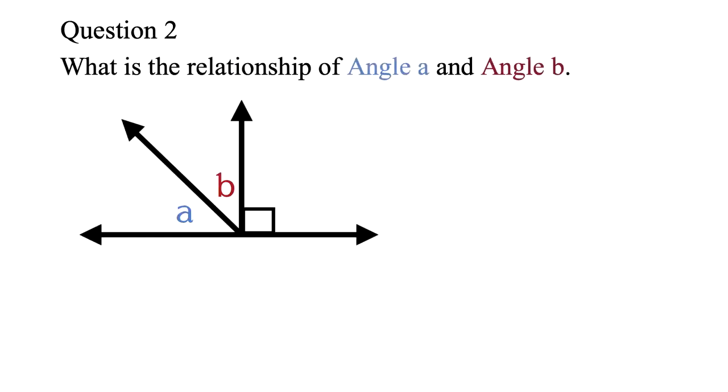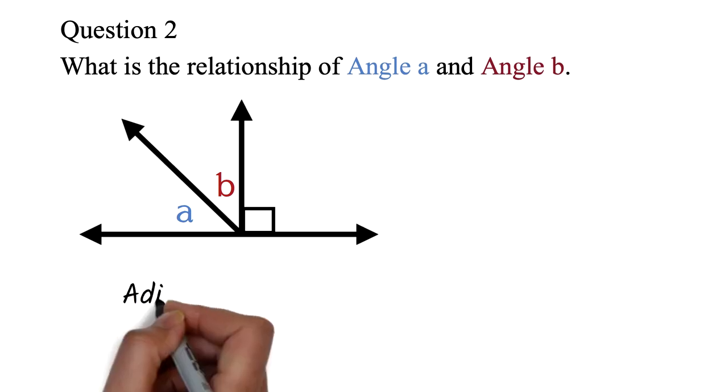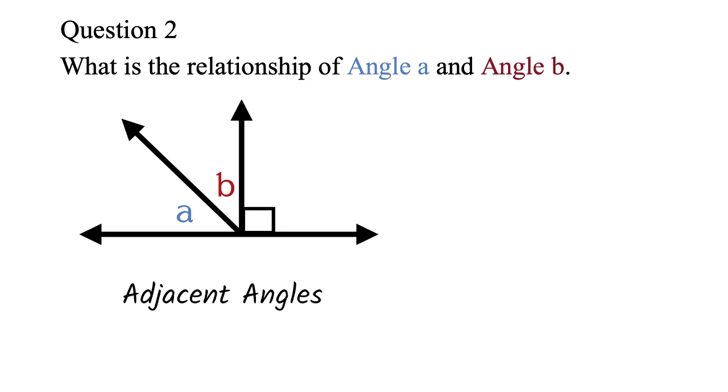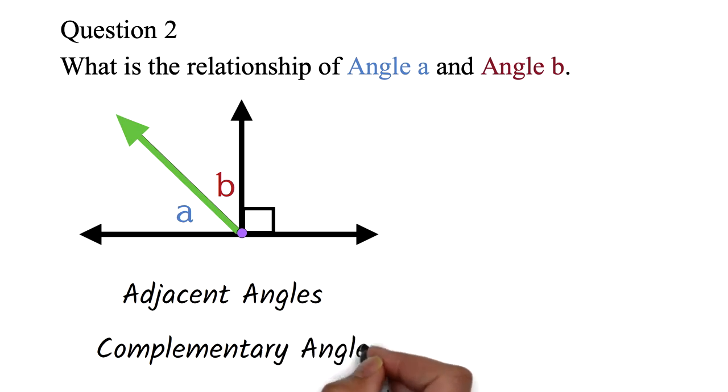Question 2: What is the relationship between angle A and angle B? We are using the relationships we learned in question 1. First, we can see that angle A and angle B are adjacent angles. They share a common side and also have a common vertex. These angles, angle A and angle B, are also complementary angles. That means they add up to 90 degrees.